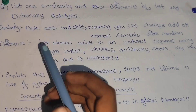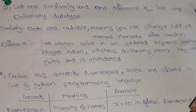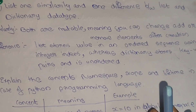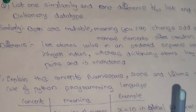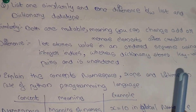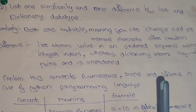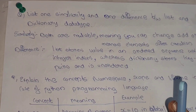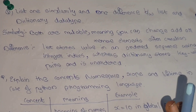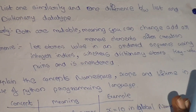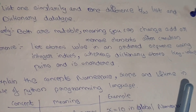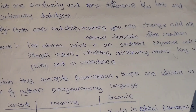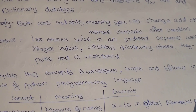The difference is that a list stores values in an ordered sequence using integer indices. If you use integer indices, you can access elements in order. A dictionary stores key-value pairs, which are unordered. That is the difference between list and dictionary.